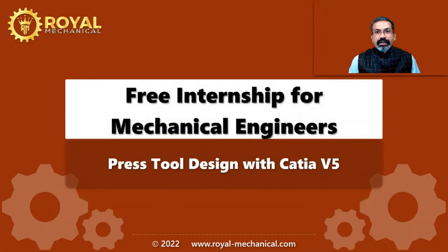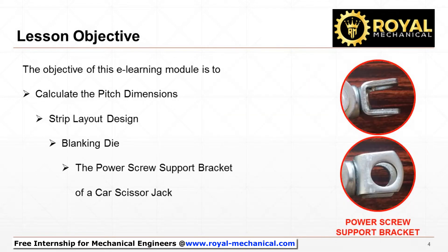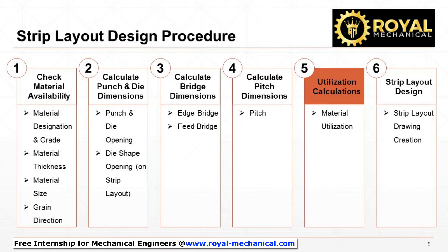Welcome. In this e-learning module, I shall explain in detail how to calculate the material utilization as part of the strip layout design for the blanking die for the power screw support bracket of a car scissor jack. We shall also complete the 5th step of the strip layout design procedure to calculate utilization.